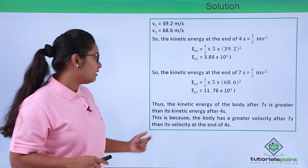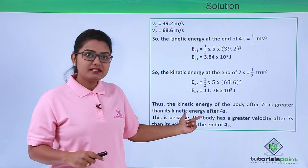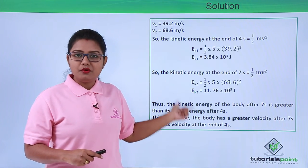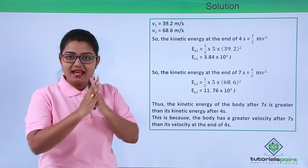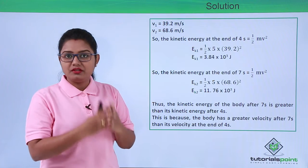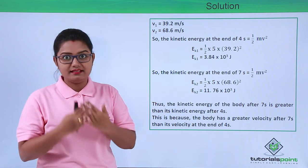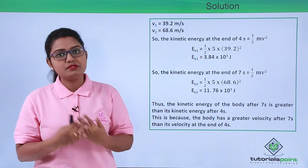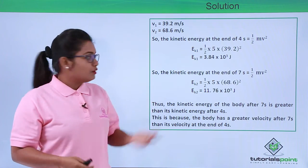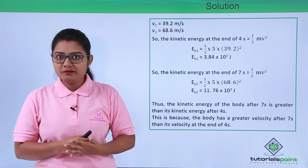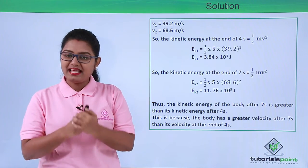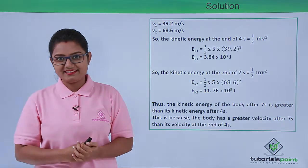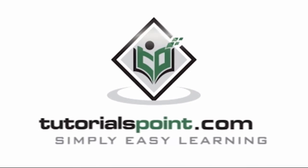The body has a greater velocity at the end of 7 seconds compared to 4 seconds, which is why its kinetic energy is higher. With this we have solved the entire problem and I hope this video was helpful to you. Thanks for watching. TutorialsPoint.com — Simply Easy Learning.